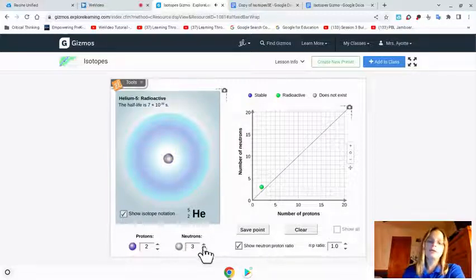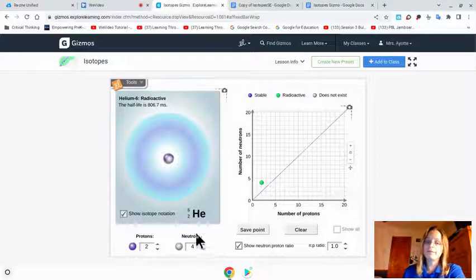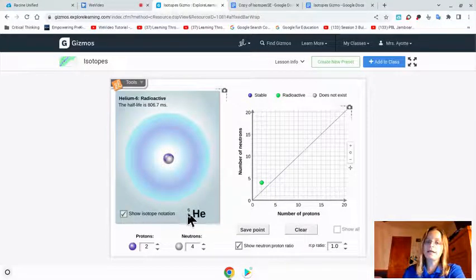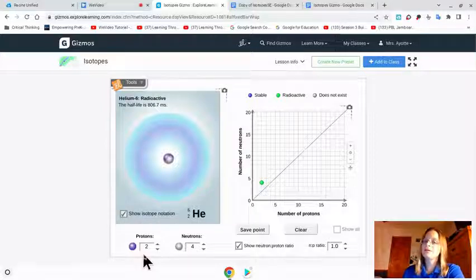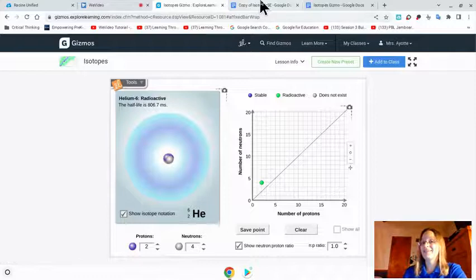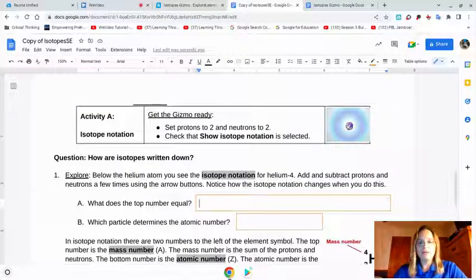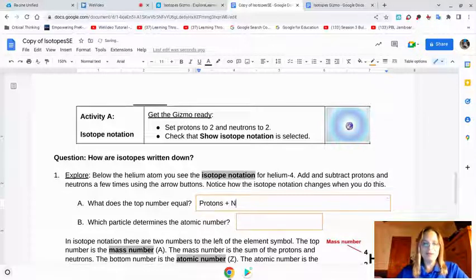Let's change this. When we add a neutron, the top number is 5. When we add a neutron, the top number is 6. So if we look at this, where does this 6 come from now? Protons is 2. Neutrons is 4. Somebody did it. 2 plus 4 equals 6. So that top number is protons plus neutrons.